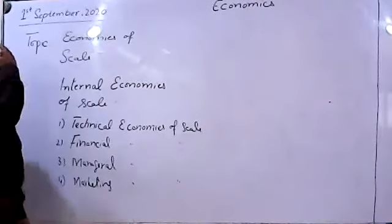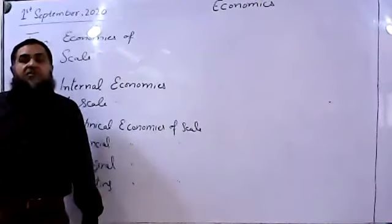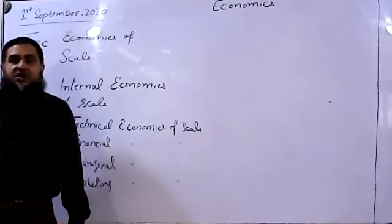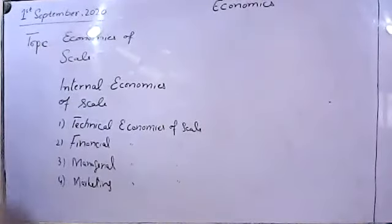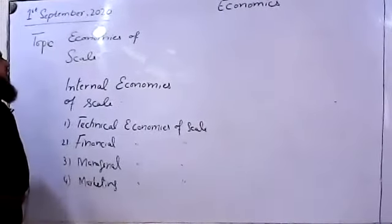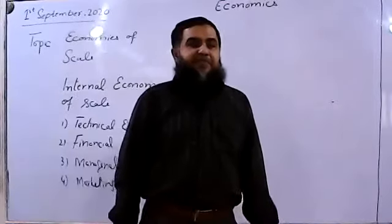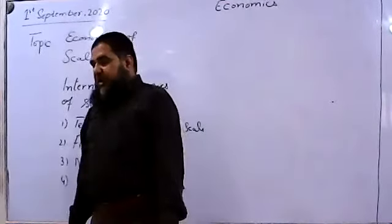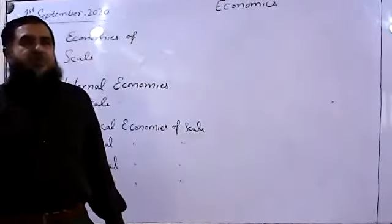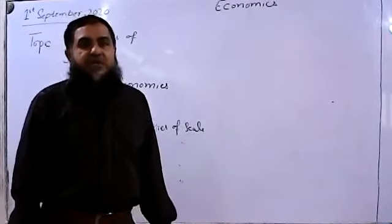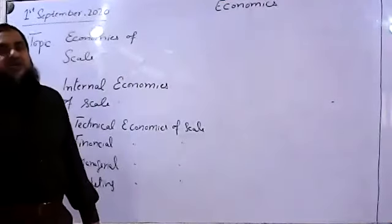Now I'm going to go into detail of economies of scale. I told you about when long run average cost of production is decreasing due to the decisions of the firms, the firm is enjoying economies of scale. Now when a firm is deciding to become larger in size, there can be two types of firm growth — growth can happen in different ways.